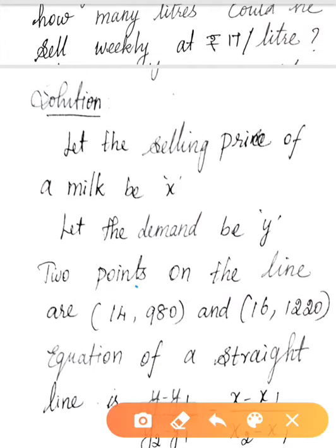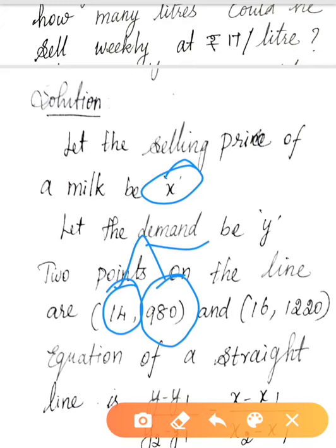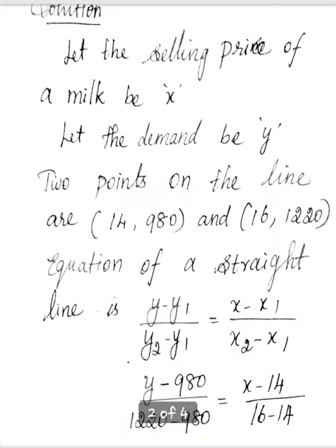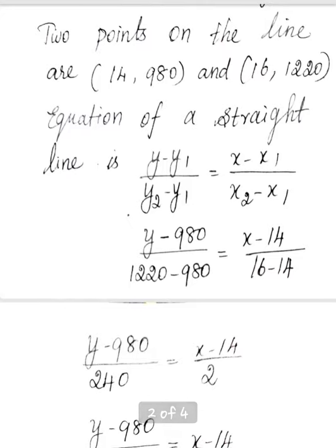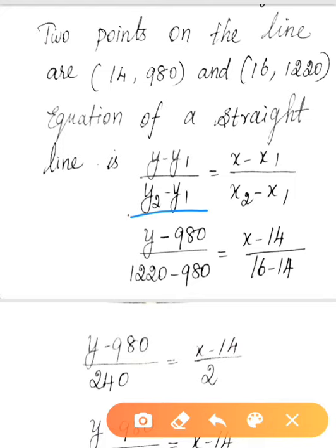At Rs. 14 per litre, 980 litres of milk is sold. At Rs. 16 per litre, 1220 litres is sold. So the two points are (14, 980) and (16, 1220).